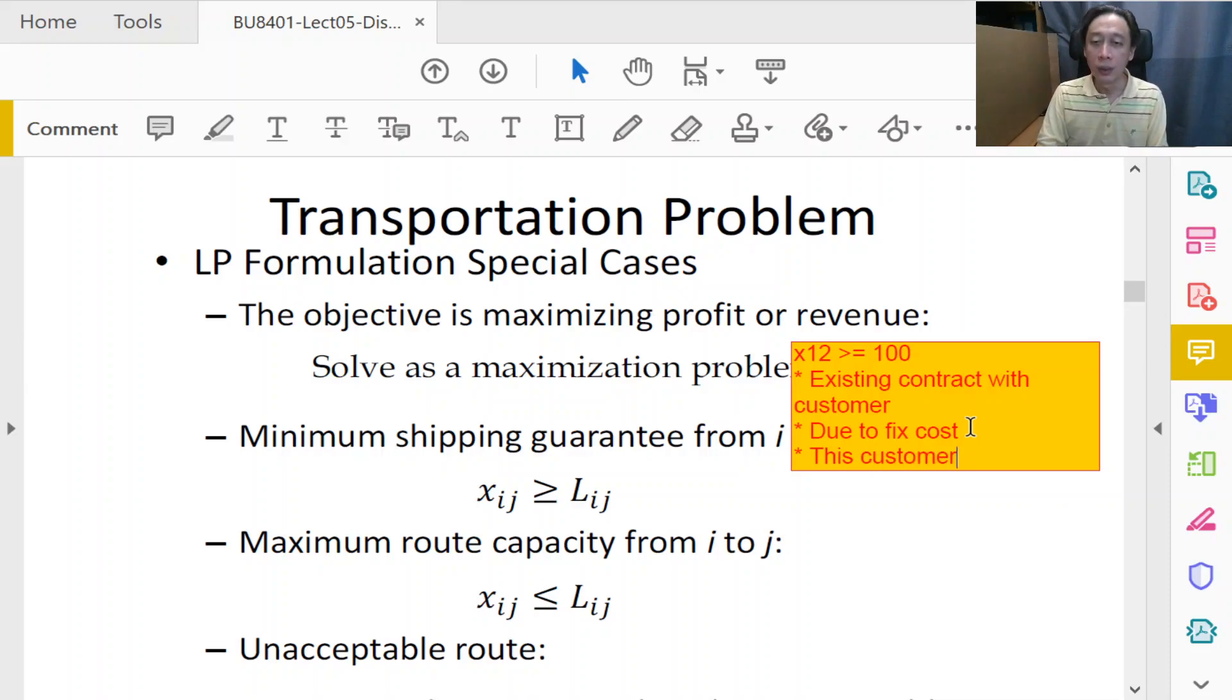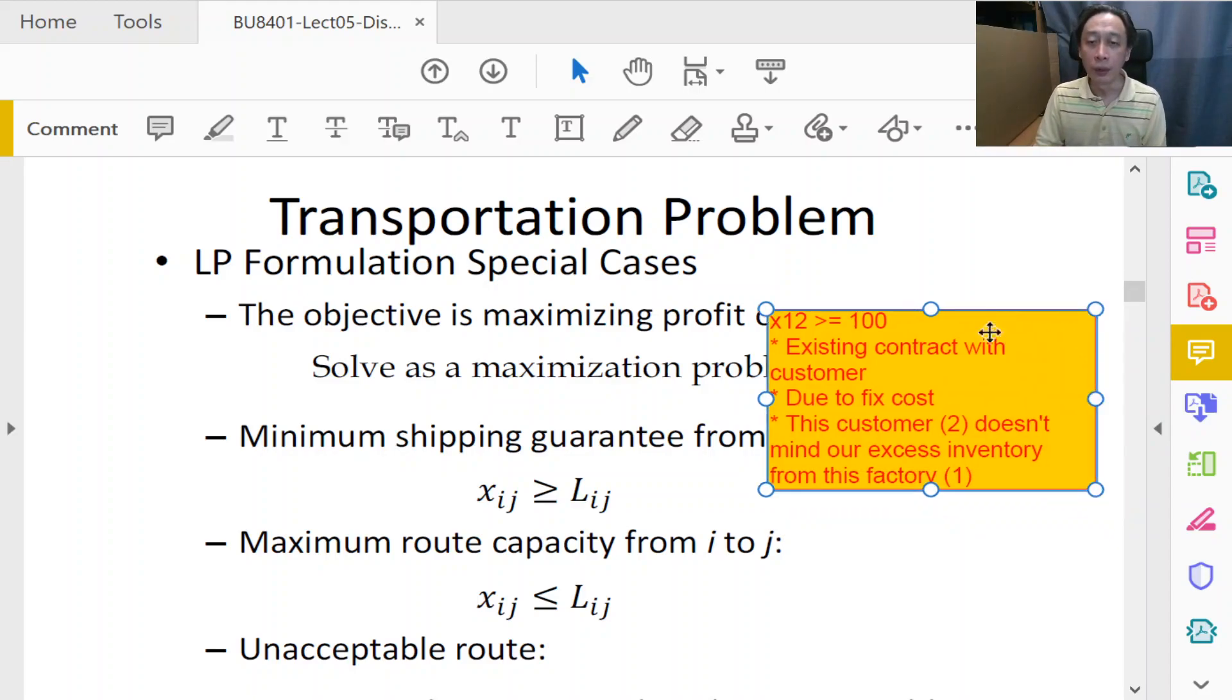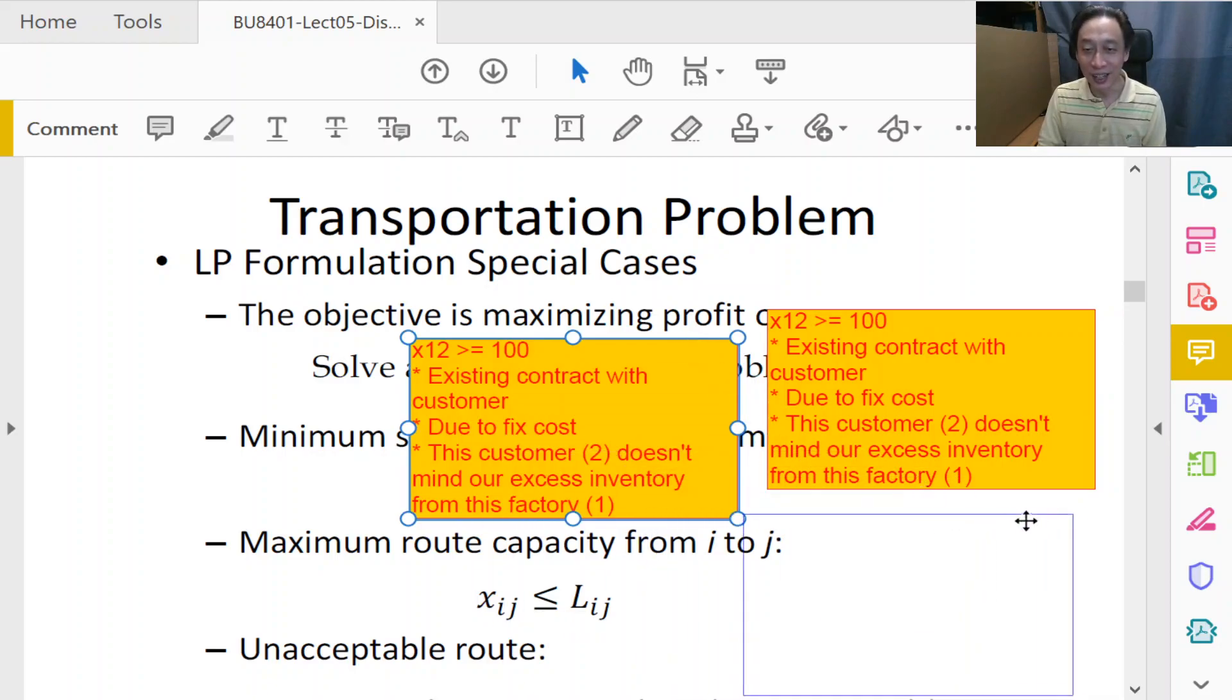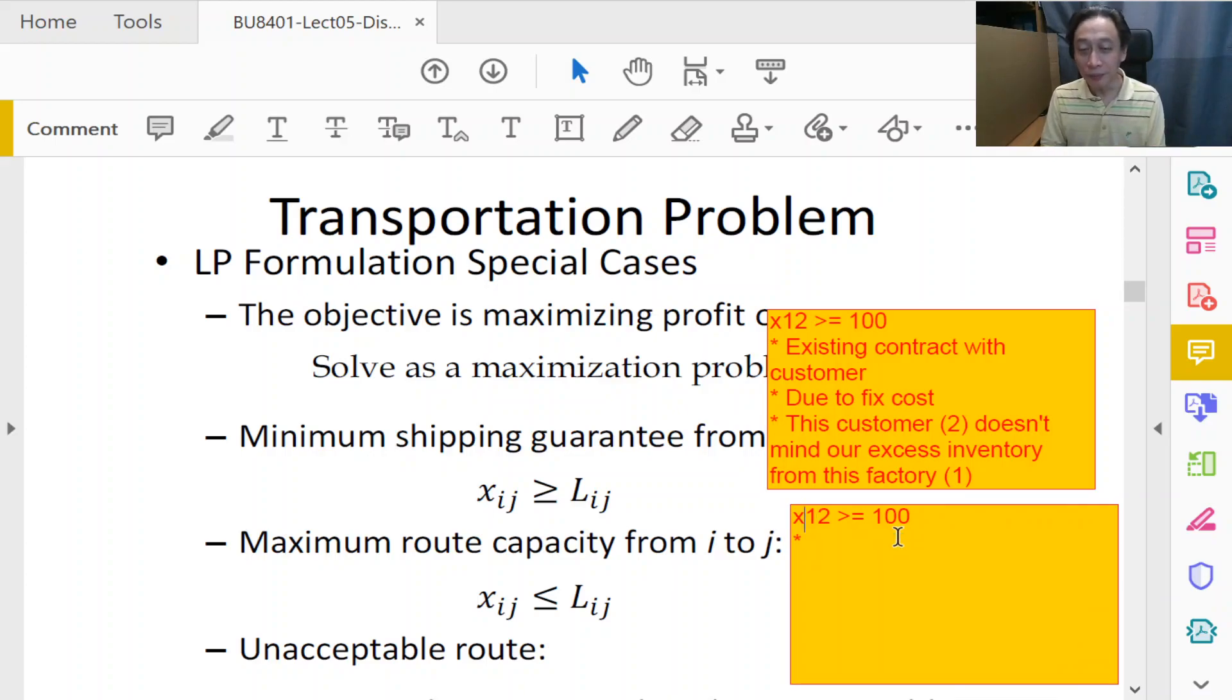We ensure a certain amount of quantity is delivered this way so it makes sense to rent the van. This can be due to many reasons - customer two doesn't mind excess inventory from this factory, or there are other temporary arrangements for this particular delivery but not for next week. There can be very localized, very specific modifications to fit specific conditions. A very simple change to our model - just greater than or equal to a number - yet customers' specific requirements can be easily realized with a simple addition of this minimum shipping guarantee.